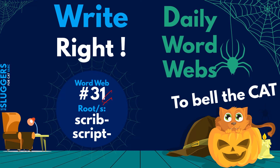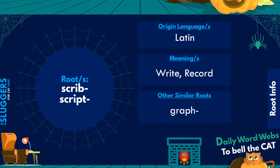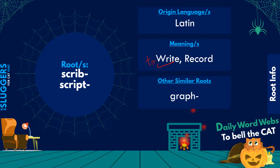Welcome to the 31st installment of Daily Word Webs. Today's roots are 'script' and 'scribe,' which stand for 'to write something.' I think it was around the fifth, sixth, or seventh standard — there was a subject related to writing essays properly or using grammar correctly. Anyhow, the root stands for 'to write' or 'to record something.' Both script and scribe have their origin in Latin. Another similar root we'll discuss is 'graph' or 'graphein,' which has Greek origins. Let's start with the words now.